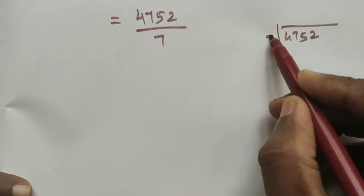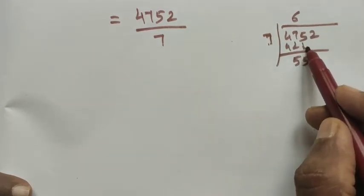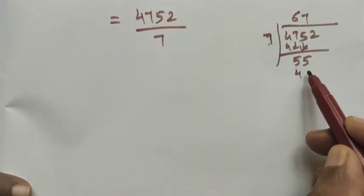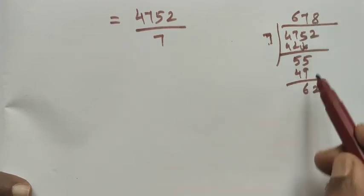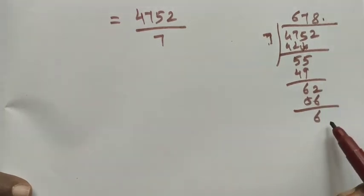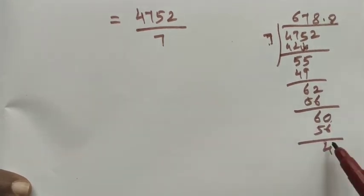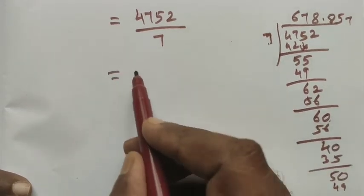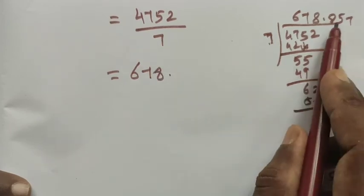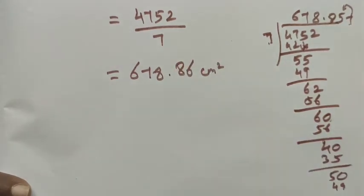Now dividing 4752 by 7: 4752 ÷ 7 = 678.85, approximately 678.86 cm². So the total area to be painted is 678.86 square centimeters.